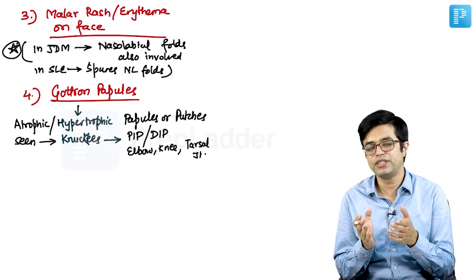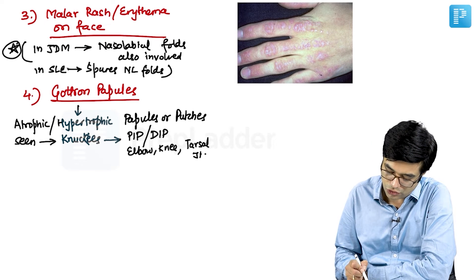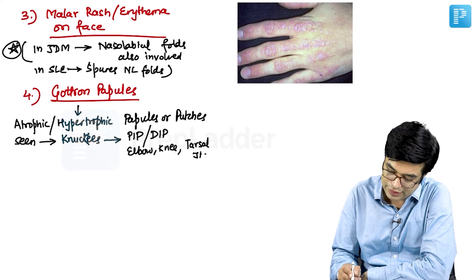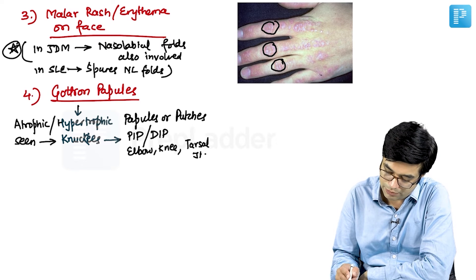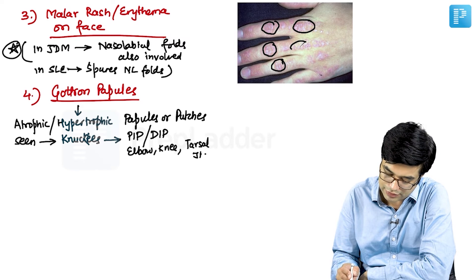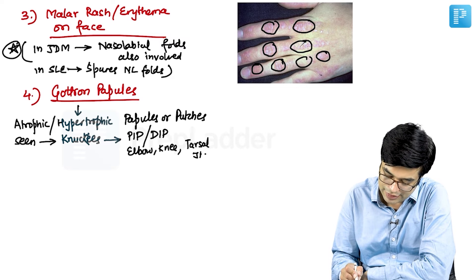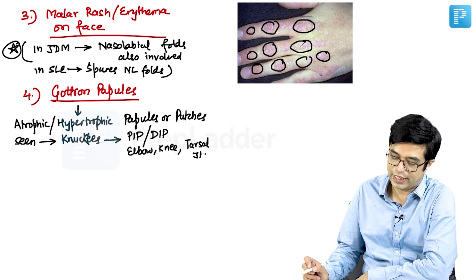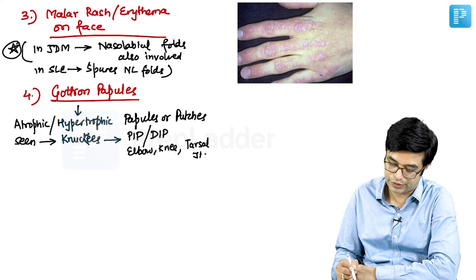Gottron papules, if you have seen the picture, you will never forget. Gottron papules appear something like this. Can you see these Gottron papules present in this patient? They are atrophic or hypertrophic papules or plaques which are present on the knuckles, PIPs, DIPs and they can also be seen on the elbow, knee and tarsal joint.